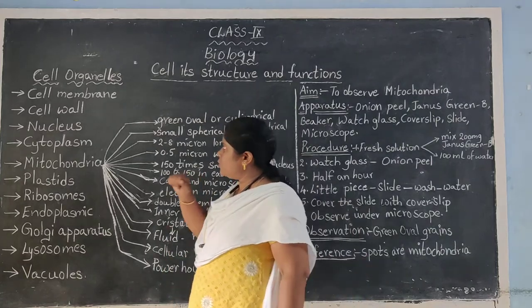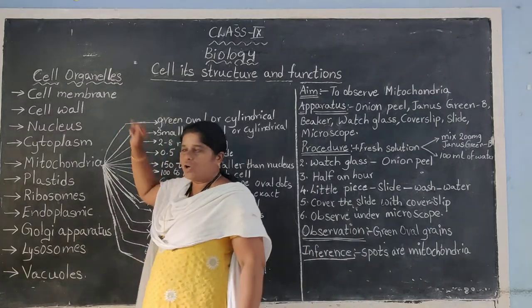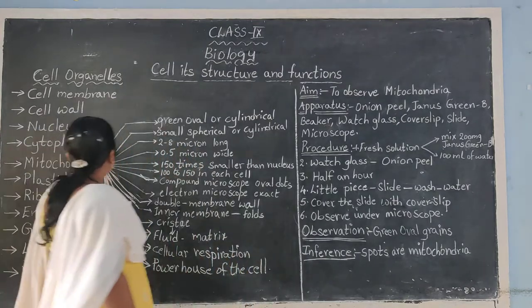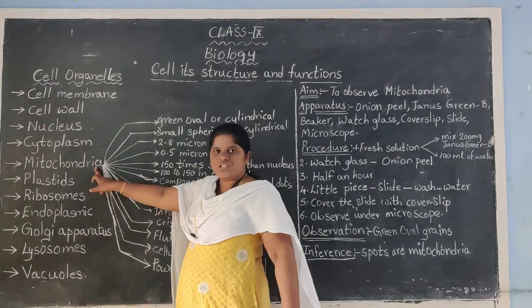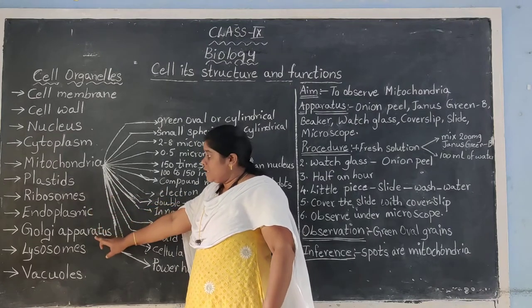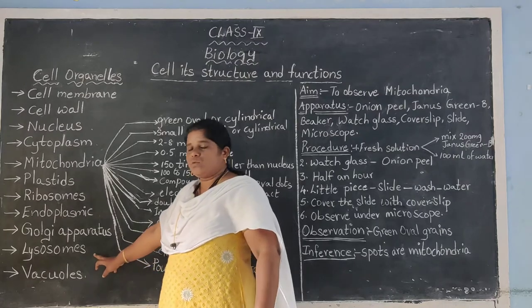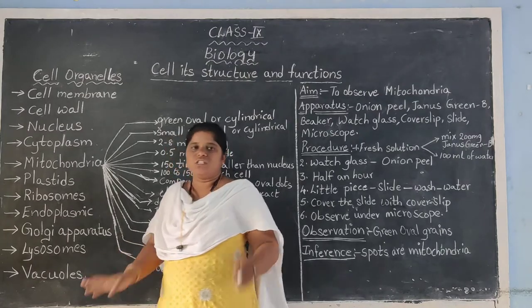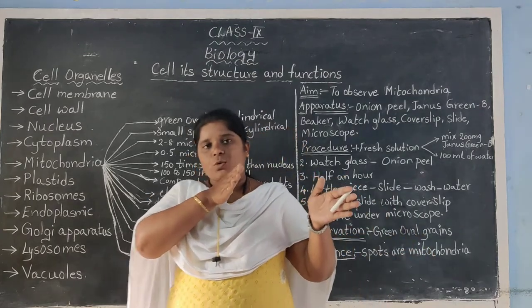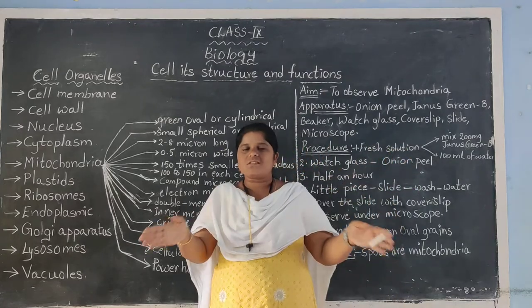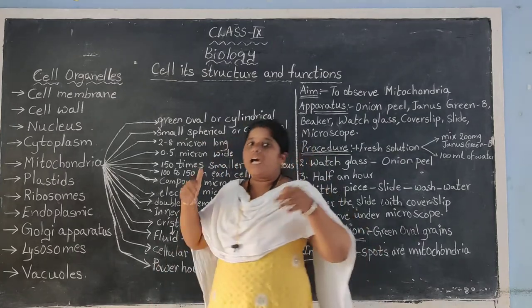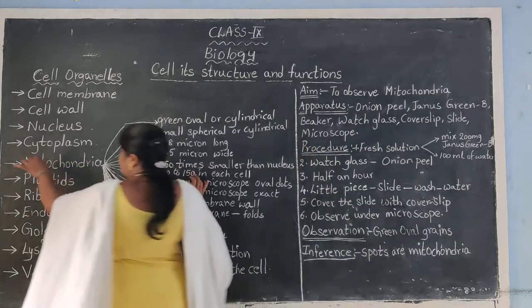Welcome back, children. In the previous video we discussed about cell organelles: cell membrane, cell wall, nucleus, cytoplasm, mitochondria, plastid, ribosome, endoplasmic reticulum, Golgi apparatus, lysosomes, and vacuole. These are all the cell organelles present in each and every cell except prokaryotic cells. We also discussed the differences between eukaryotic and prokaryotic cells. Now let us start discussing about mitochondria.